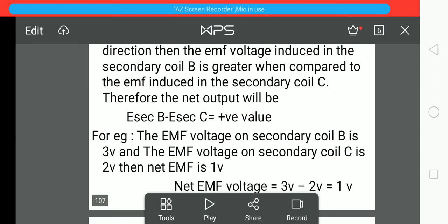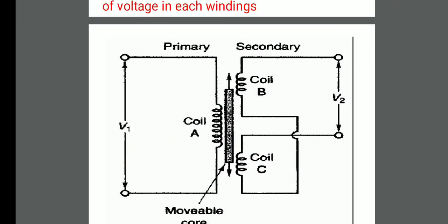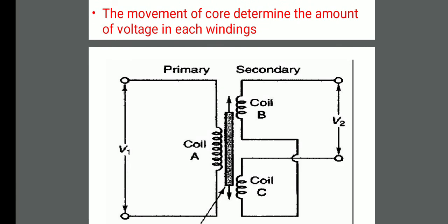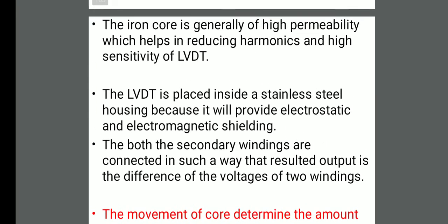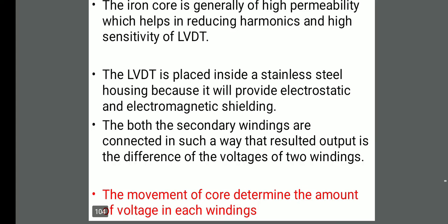One more important thing to note is that the entire assembly of the LVDT is contained in a steel casing in order to prevent any losses and to ensure accurate readings. The entire LVDT is enclosed in a stainless steel housing because it provides electrostatic and electromagnetic shielding. Electromagnetic or electrostatic effects can give wrong readings, so in order to prevent that, the entire assembly is placed inside a stainless steel housing.